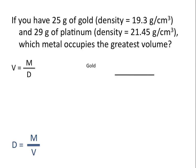Let's look at the sample of gold first. We'll put the mass on top, 25 grams, divided by the given density, 19.3 grams per centimeter cubed.